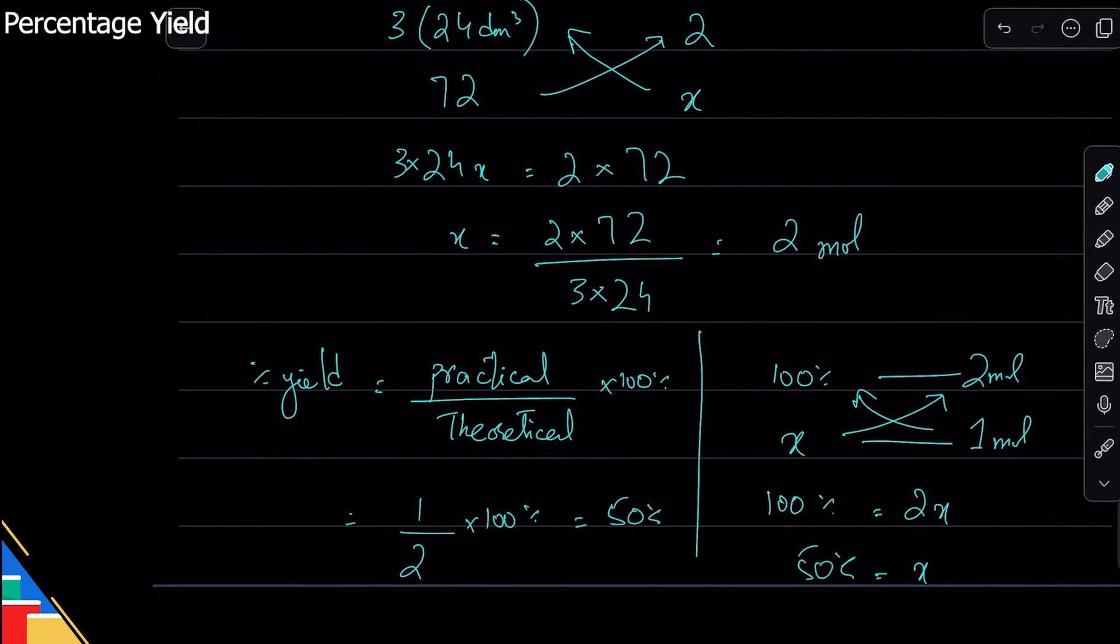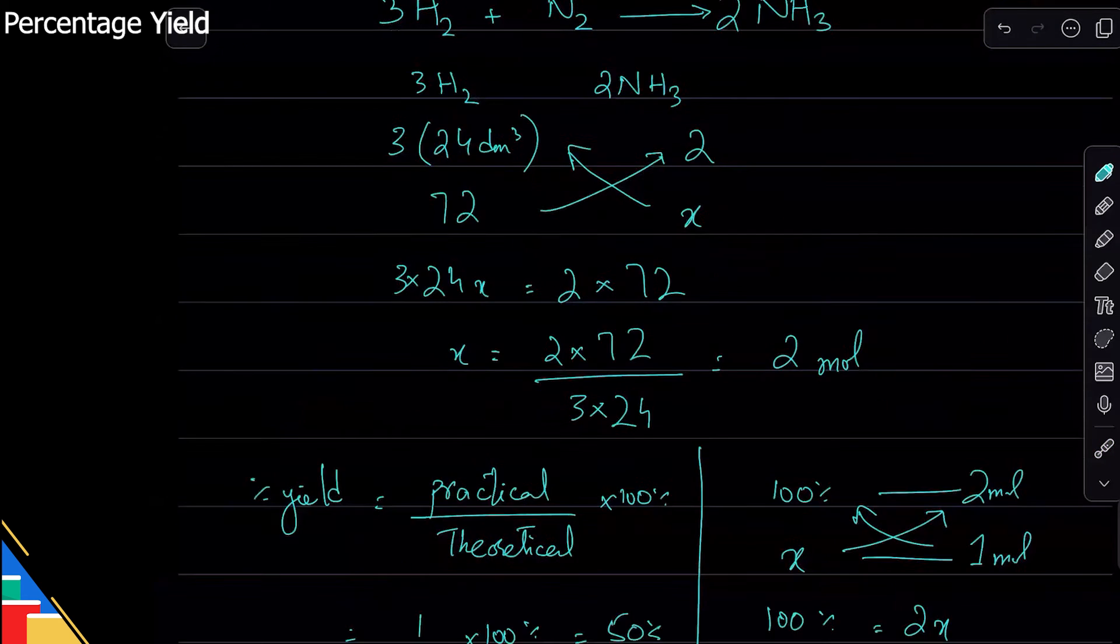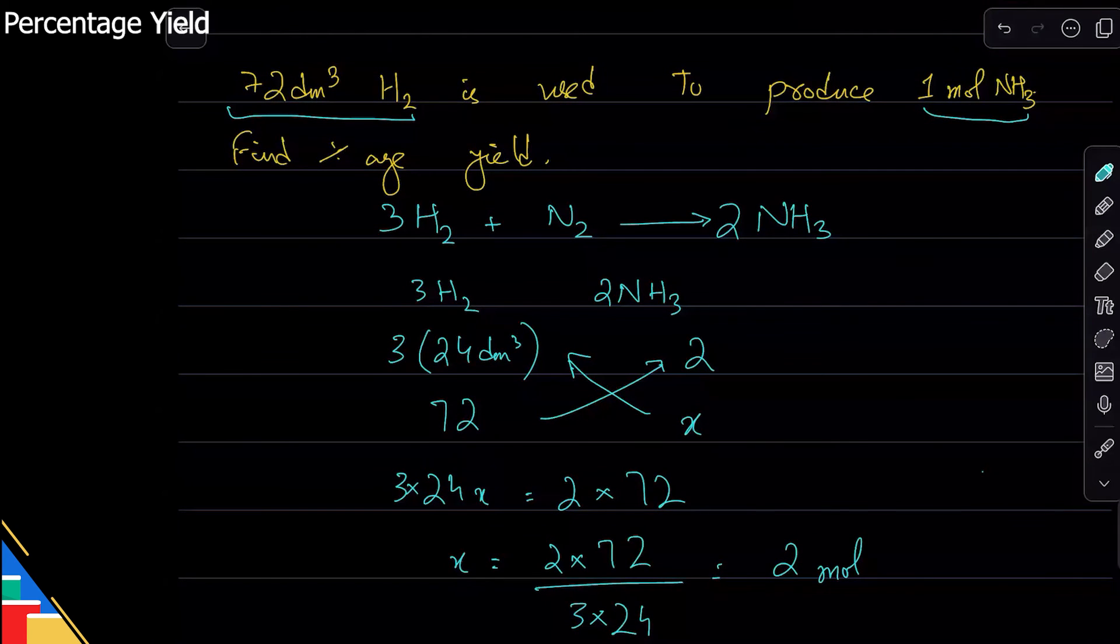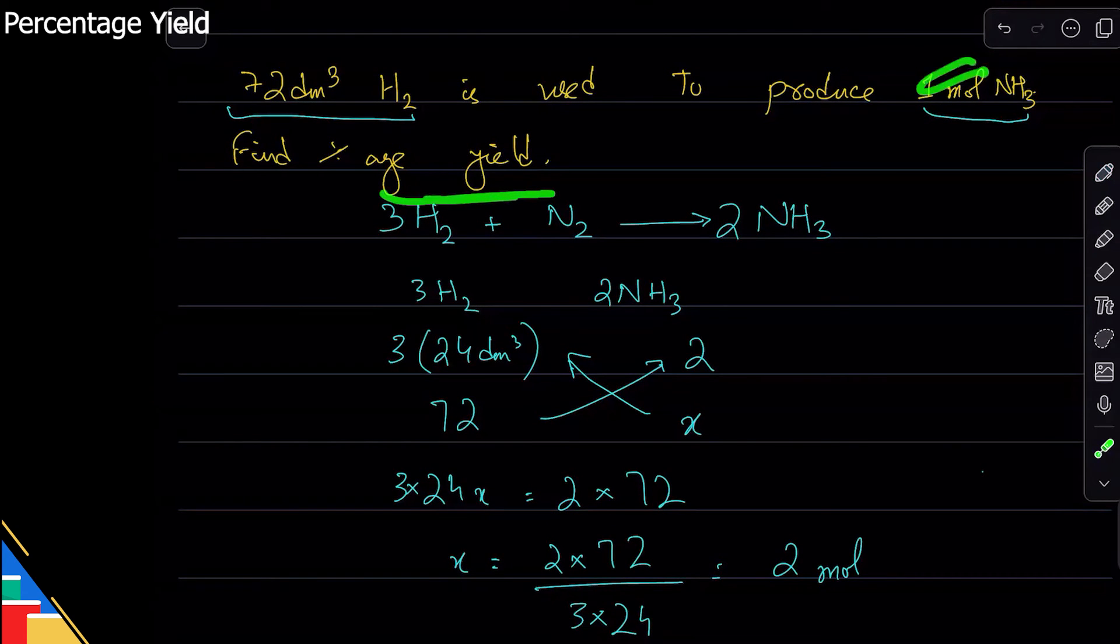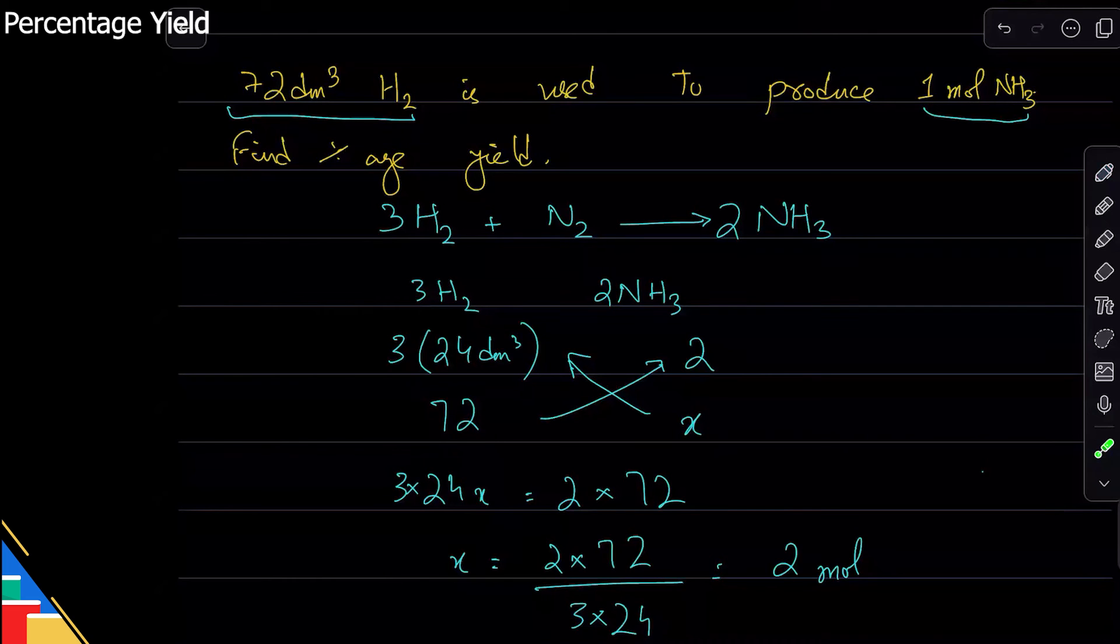So no matter whether you do ratio method or you use the formula, the yield is still the same. The method to do that: ignore the part for which you're looking for the yield. First ignore that and calculate the theoretical thing using moles method.